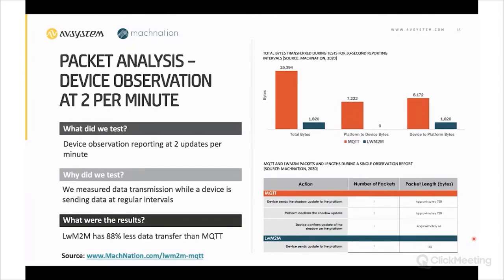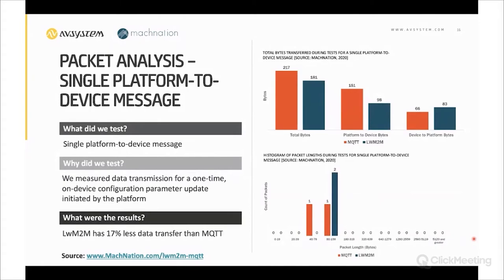Let's take a look at one more scenario. There's a lot more information in the white paper with four or five graphs for each topic. This is another interesting one: the single platform-to-device message. This would be something like the platform telling the device to change its reporting interval, start a firmware update, or do some action. Here we see the most pared-down comparison—very little overhead for either protocol for this kind of message. This is probably one of the purest comparisons of the underlying protocols rather than the out-of-the-box implementations.